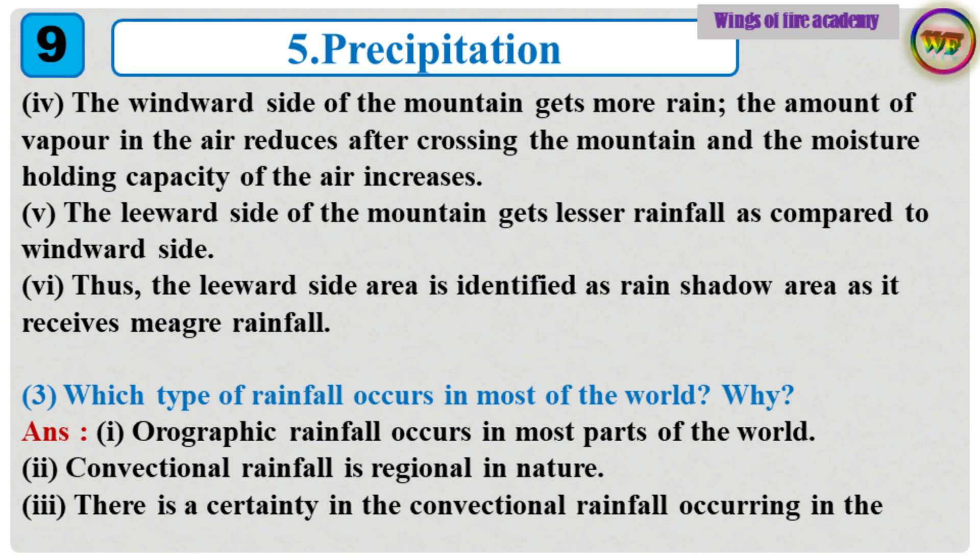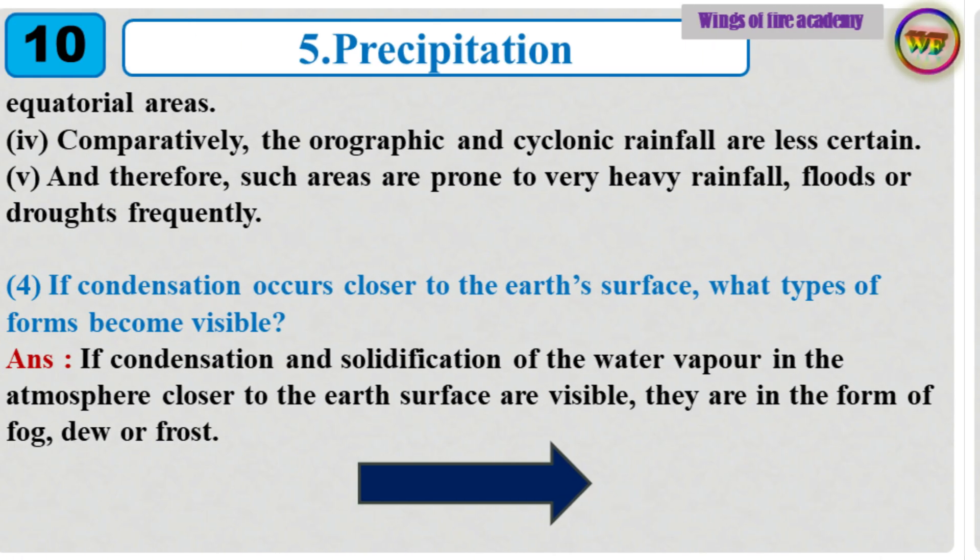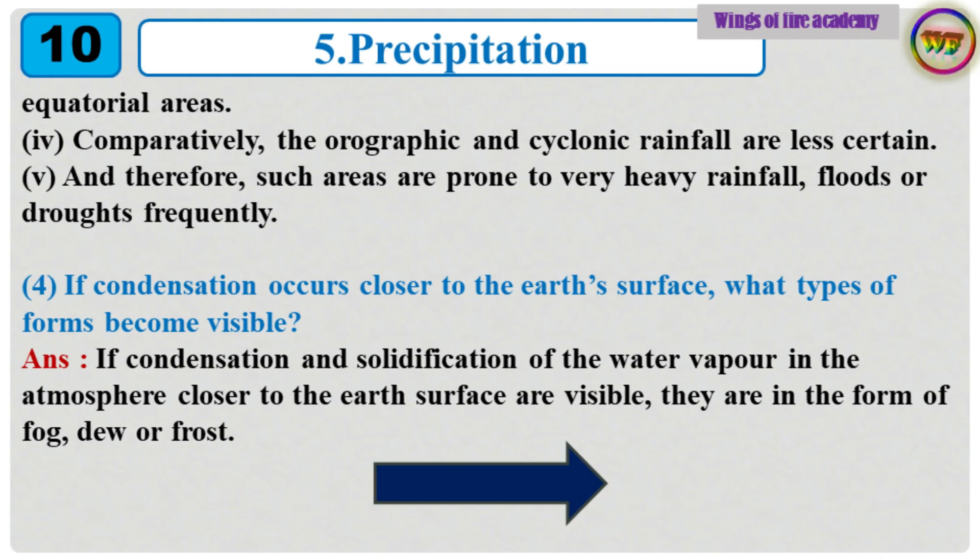Which type of rainfall occurs in most of the world? Answer: Orographic rainfall occurs in most parts of the world. Convectional rainfall is regional in nature. There is certainty in convectional rainfall occurring in equatorial areas. Comparatively, orographic and cyclonic rainfall are less certain, and therefore such areas are prone to very heavy rainfall, floods or droughts frequently.